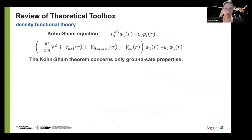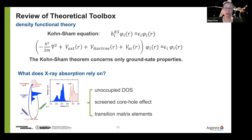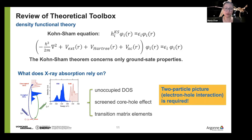In density functional theory, we have a Kohn-Sham equation, very analogous to the Schrödinger equation, except that it's for one single electron and all interactions between electrons are thrown into the exchange-correlation functional. Kohn-Sham is supposed to be for ground state properties. X-ray absorption relies on the unoccupied density of states, the screened core effect, and transition matrix elements — therefore the two-particle electron-hole picture is required.